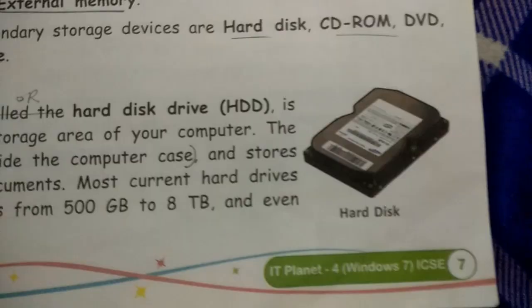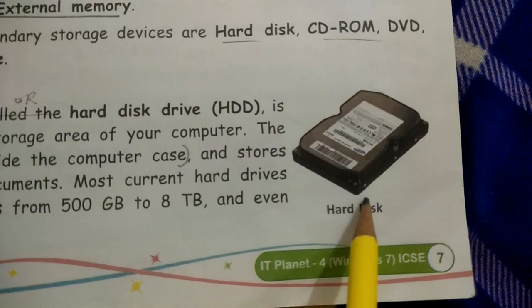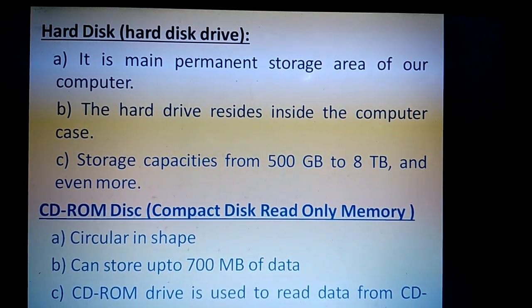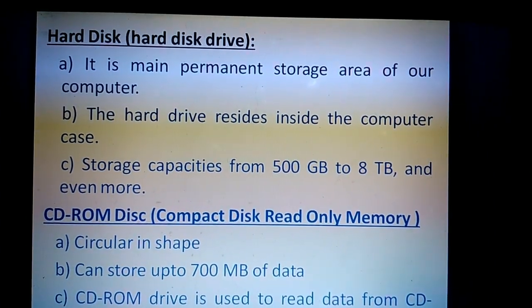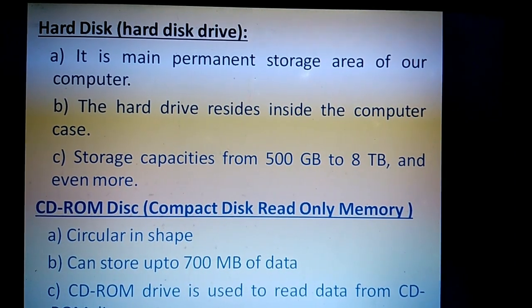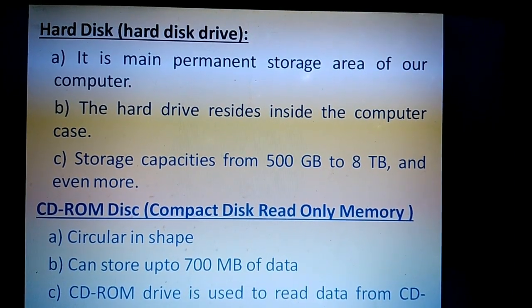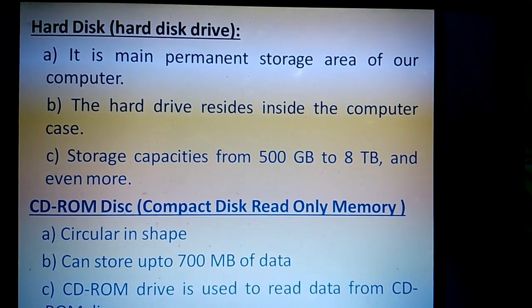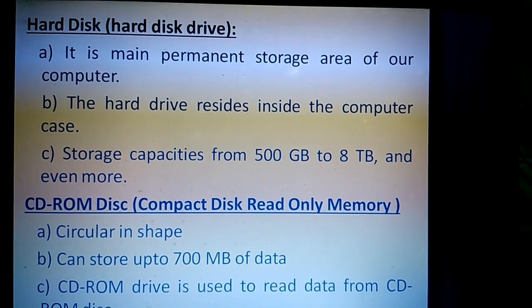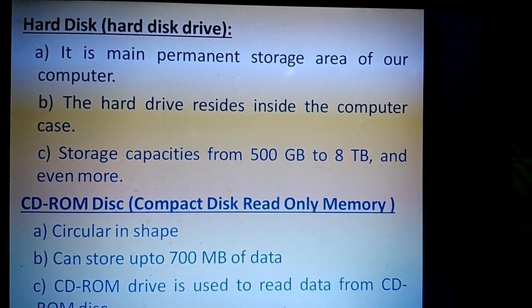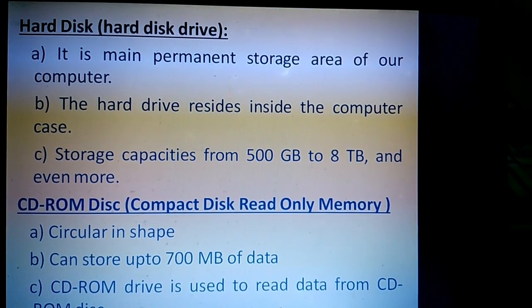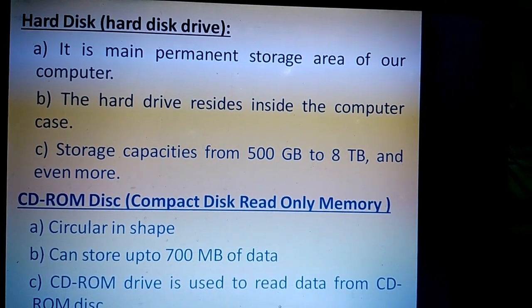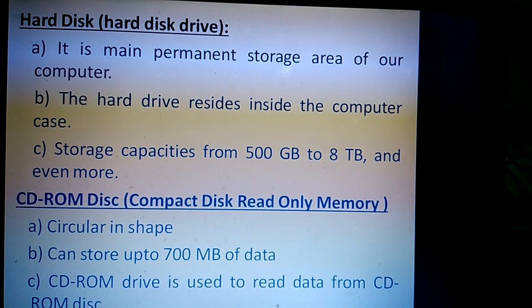The first secondary storage device is the hard disk. Here is a picture of the hard disk storage device. The hard disk is the main permanent storage area of our computer. The hard drive resides inside the computer case. Hard disk storage capacities range from 500 GB to 8 TB and even more.